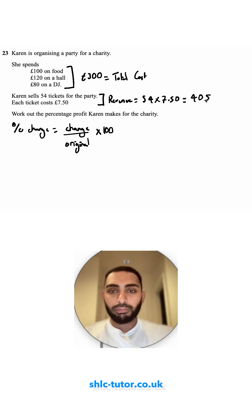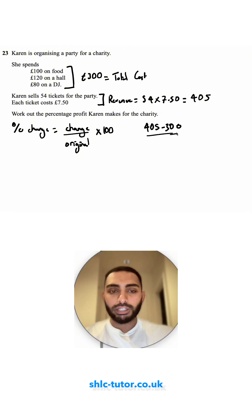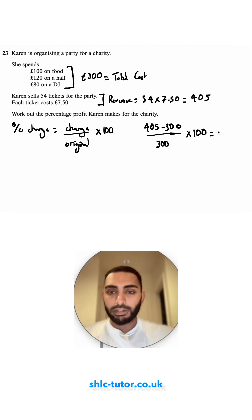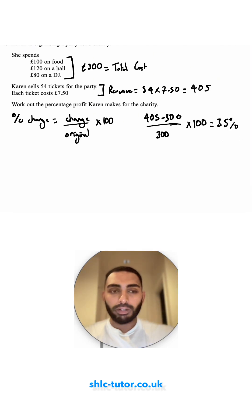So here, the change — the profit that we're making — is £405 take away £300. That's my numerator, that's my change. My original number, my cost, was £300, and then I need to multiply that by 100. The top simplifies to £105 divided by £300, and if I times that by 100, I get 35%. So the percentage profit is 35%.